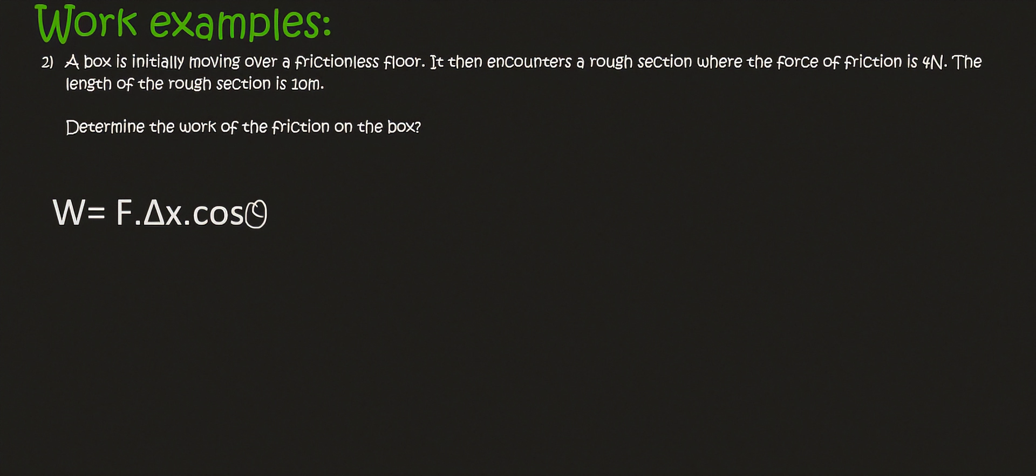Here's another example. Number 2 says that we have a box that is initially moving over a frictionless floor. It then encounters a rough section where the force of friction is 4 newtons. The length of the rough section is 10 meters. Determine the work of the friction on the box.